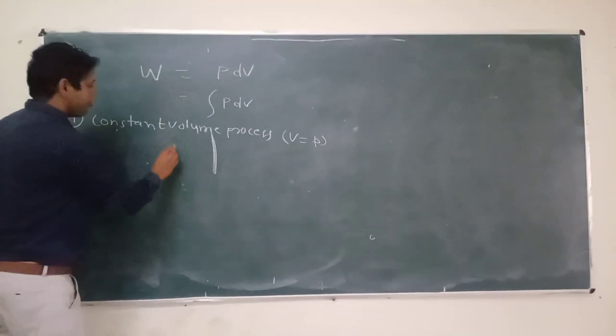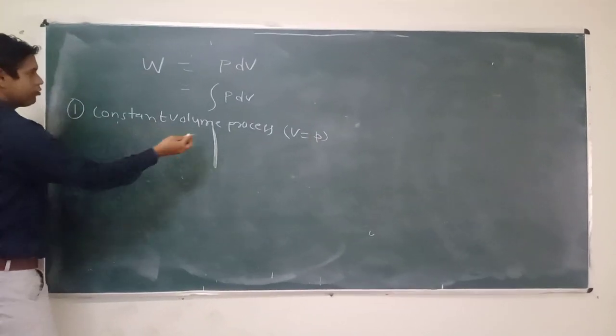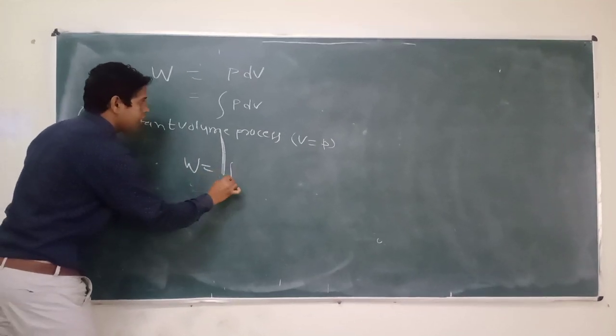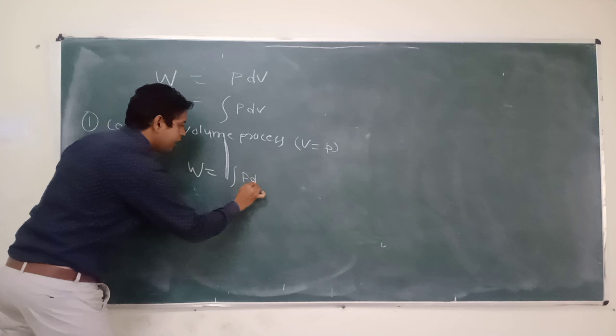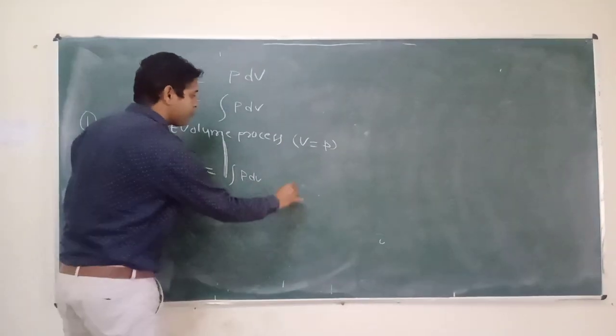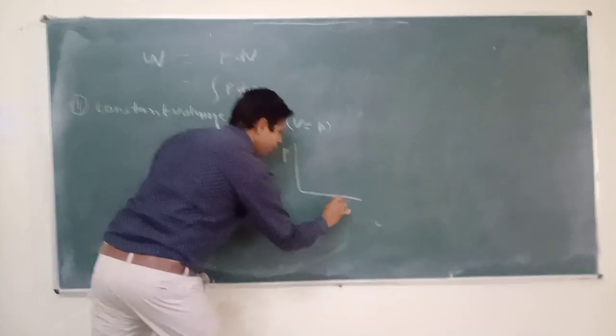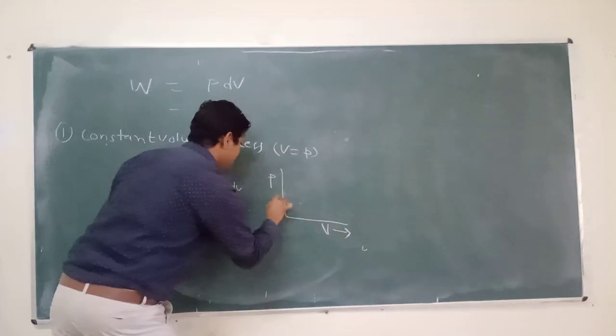Then we need to apply the formula for constant volume process. W is equal to integration of PdV. If we draw the PV diagram, P, V, PV diagram...